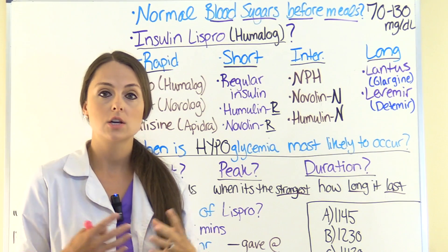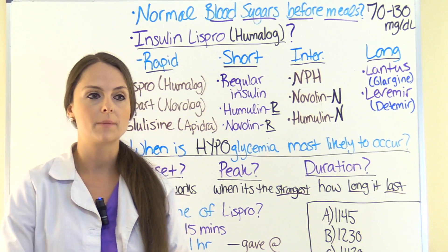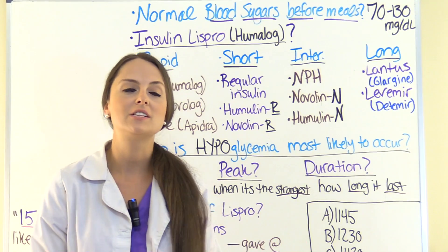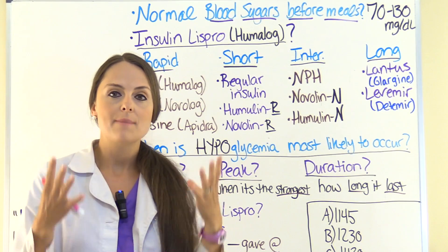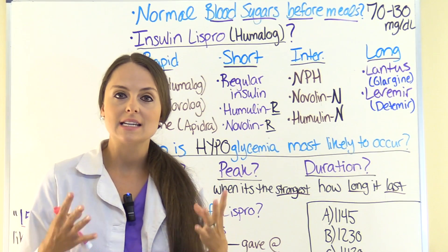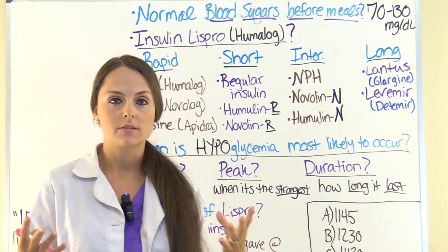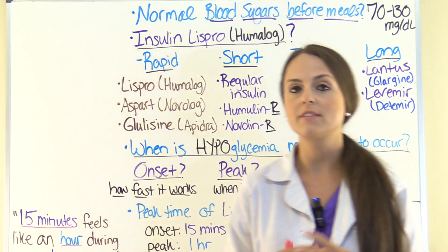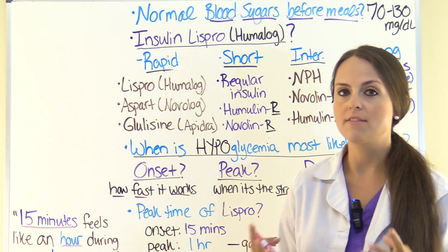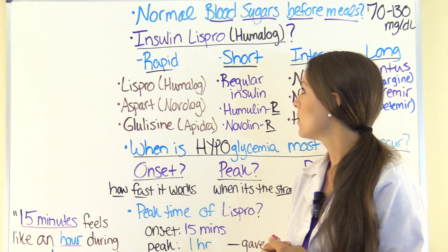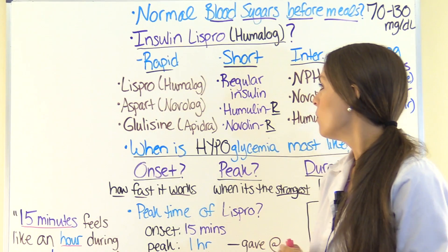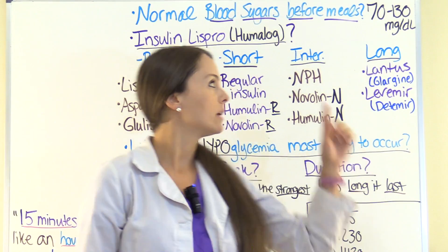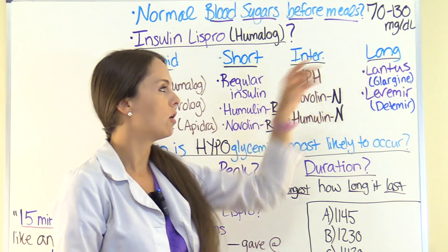The physician has ordered insulin Lispro, also known as Humalog. Think back to pharmacology — what type of insulin is Lispro? There are 4 different categories of insulin. We have Rapid, Short, Intermediate, and Long.